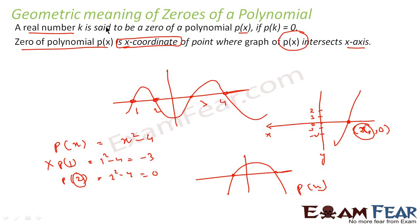So a zero of the polynomial function is the x-coordinate of the point where the p(x) function meets the x-axis.